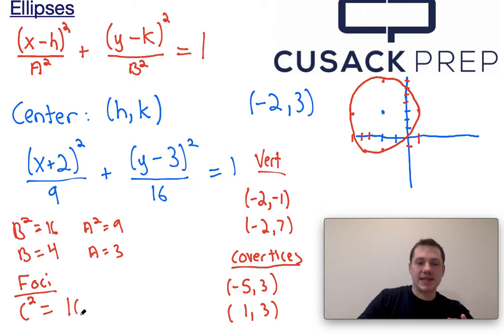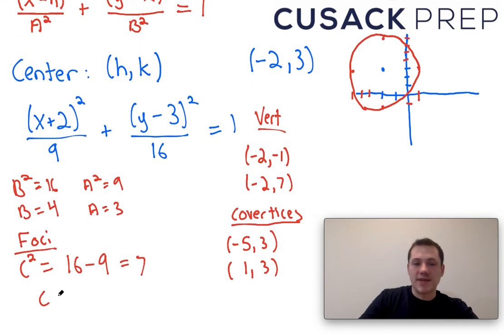So here it's going to be 16 minus 9. That's going to lead us to 7. Well if c squared is equal to 7, then c must be the square root of 7.